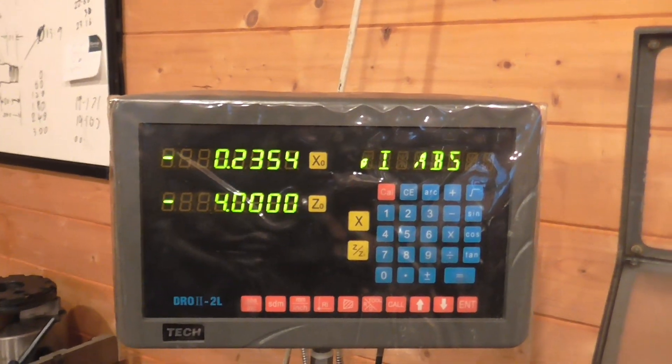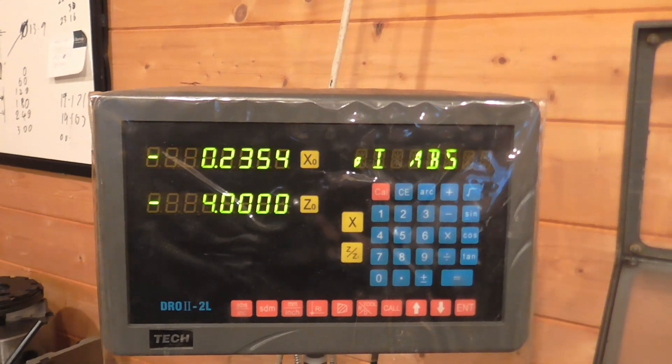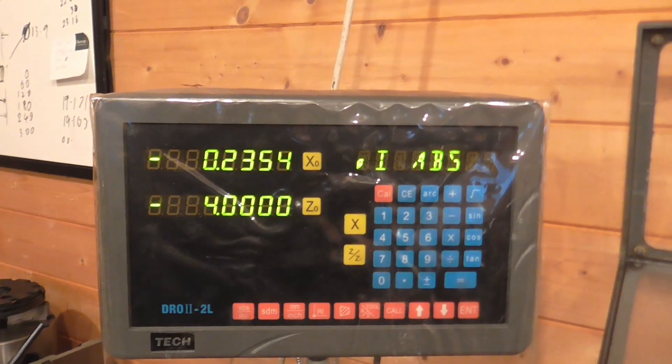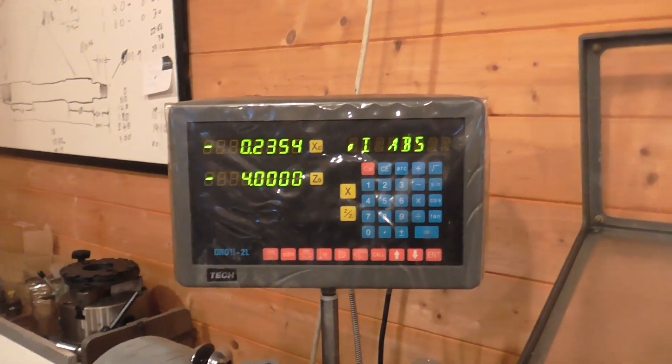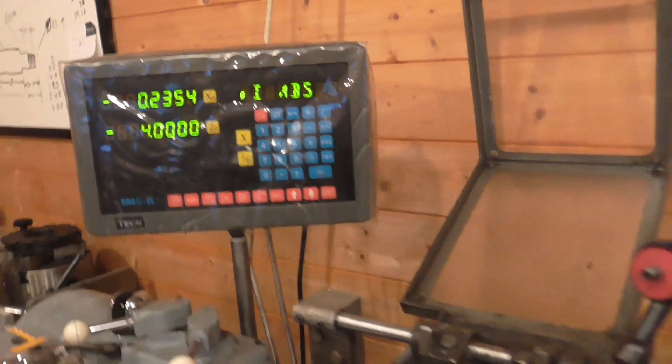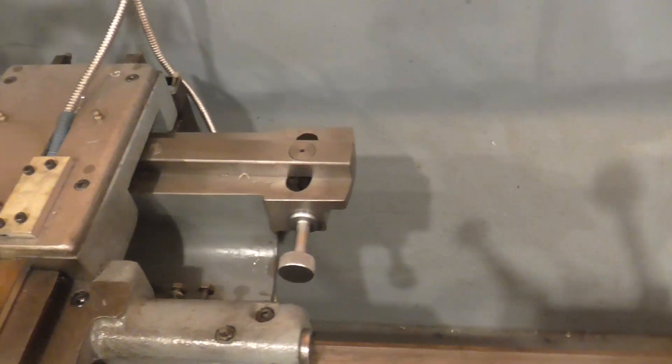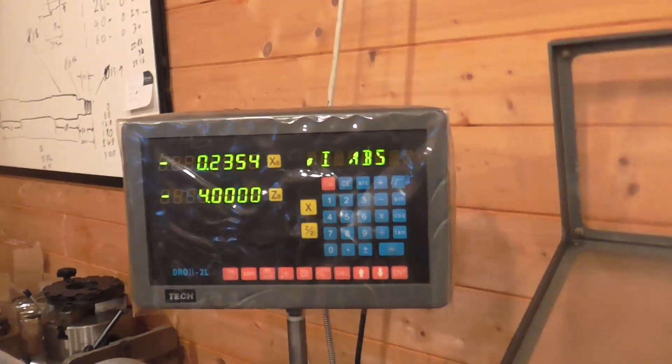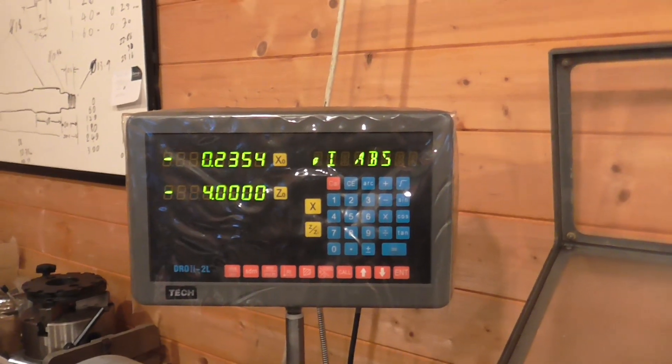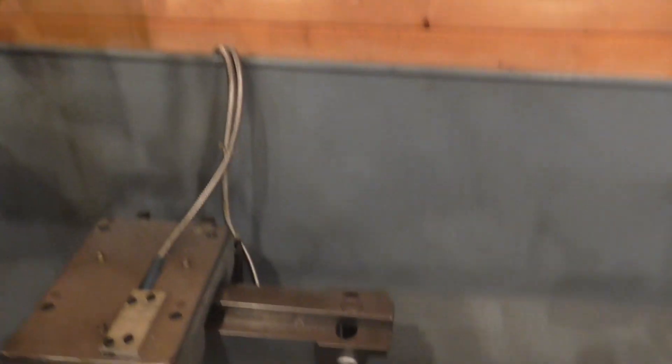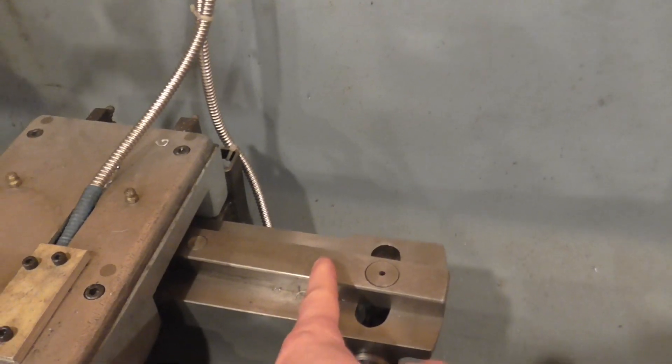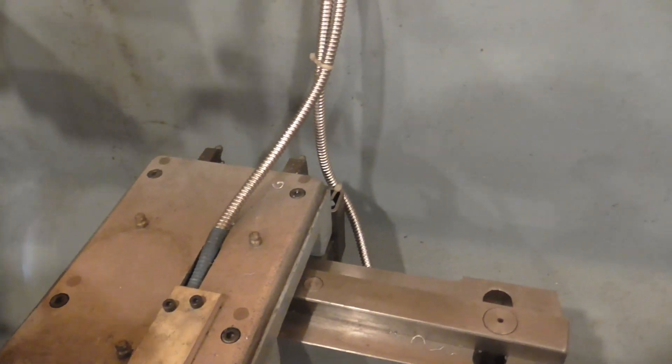As you can see we've got two hundred and thirty-five thousandths of an inch. We're looking for 250. So we're not quite at the right angle. So I'll turn the adjuster. Now I can't just turn it until the display reads 250. Because we're looking at the difference between this end of the bar and the far end of the bar.